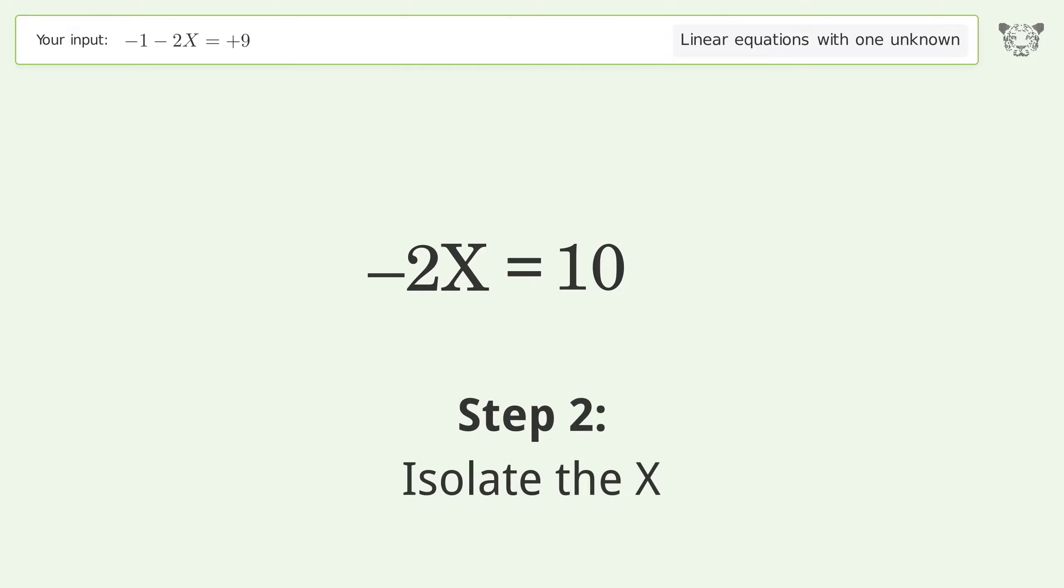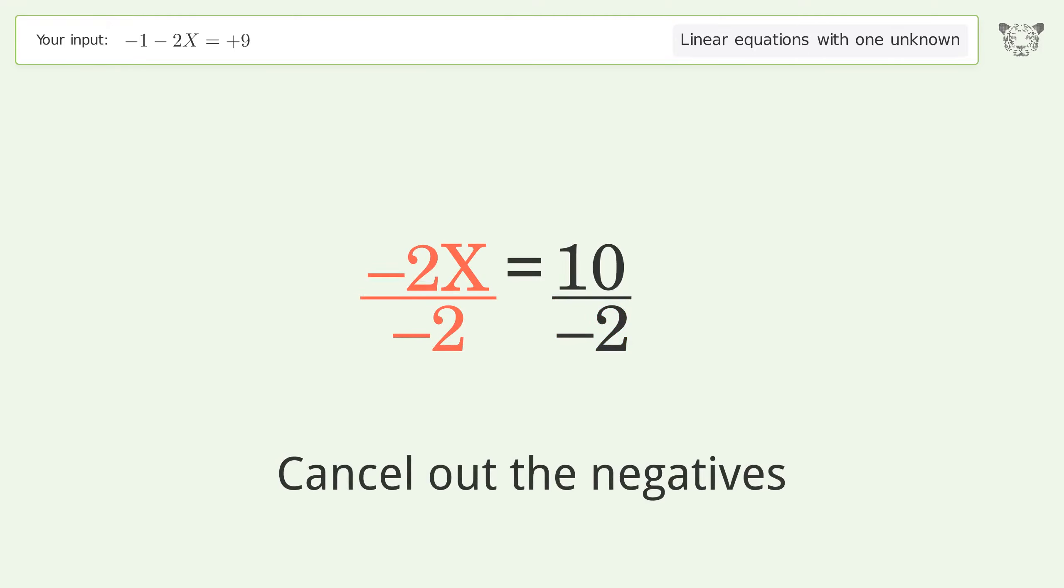Isolate the X. Divide both sides by negative 2. Cancel out the negatives.